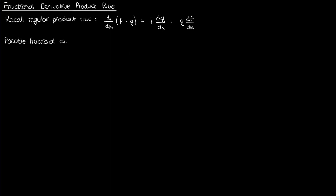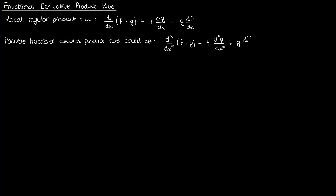In fractional calculus you might be tempted to say that the fractional derivative of the product of two functions is similar — the first function times the fractional derivative of the second plus the second function times the fractional derivative of the first. This is actually incorrect and I'll show you a counterexample explaining why.